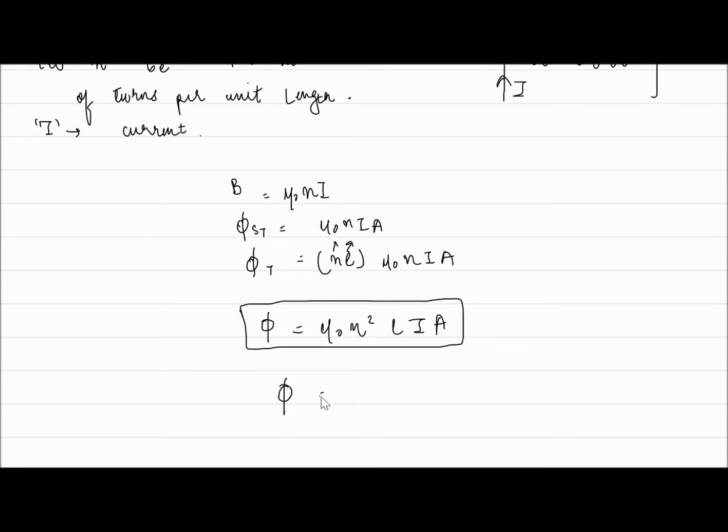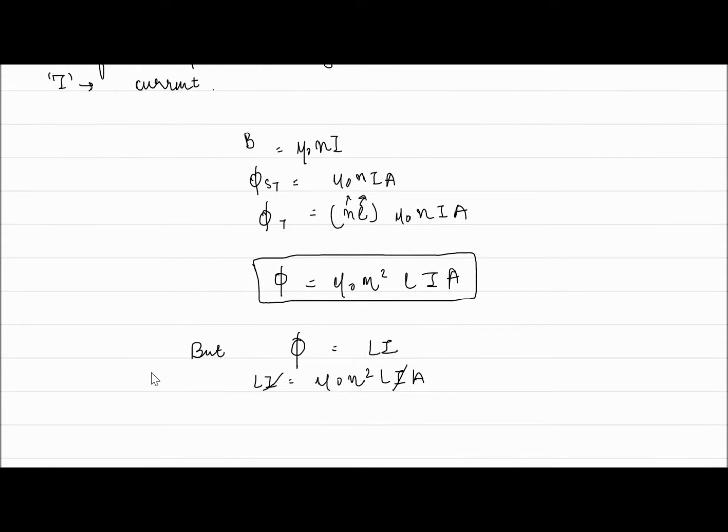But as we know, φ = LI. So we have LI = μ₀N²LIA. We will cancel the I and we are left with the formula.